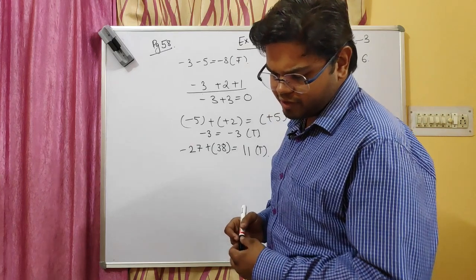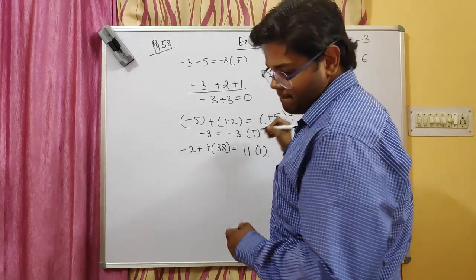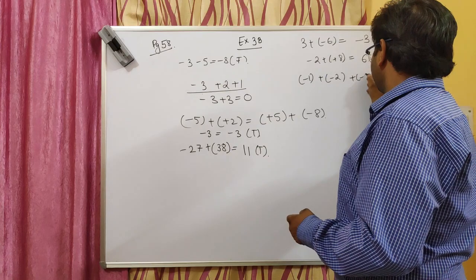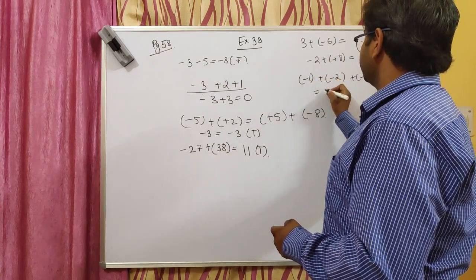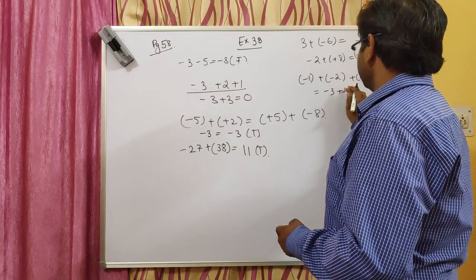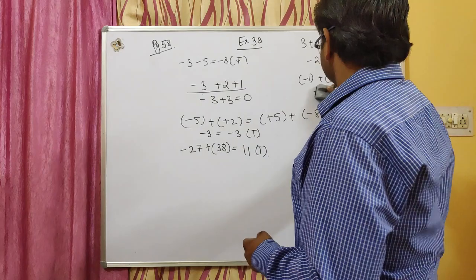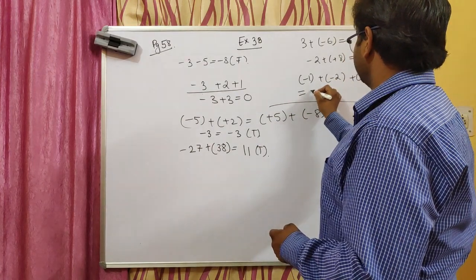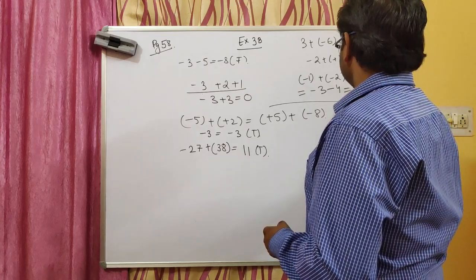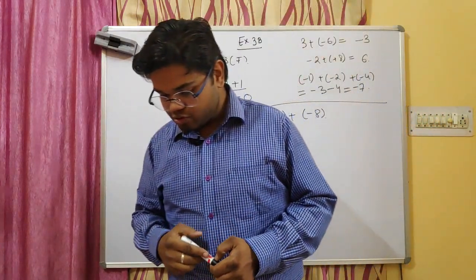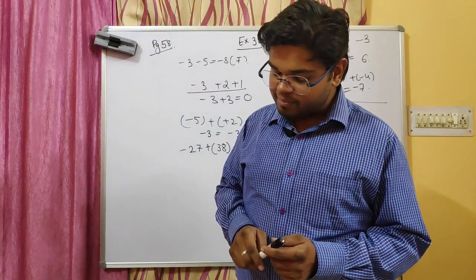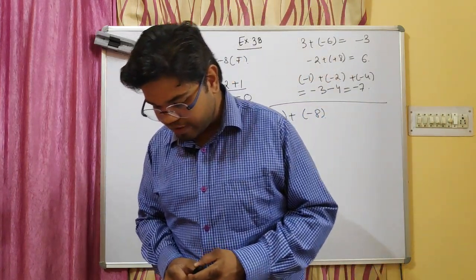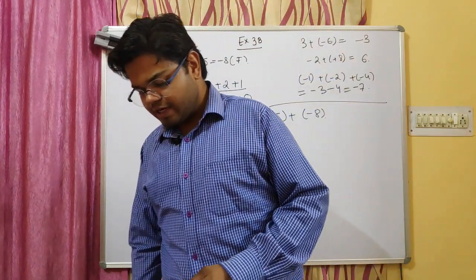You will do question three parts three, four, and five in your rough register. Let me discuss part six: minus one plus minus two plus minus four. Minus one minus two equals minus three, and minus three plus minus four equals minus seven. So the answer is minus seven. For question three, you will do parts one, two, and six in your fair notebook, and parts three, four, and five in your rough register.